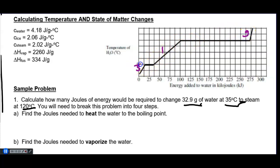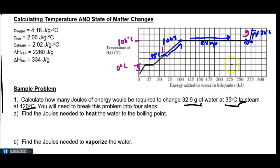Mark the starting temperature at 35°C and the ending temperature at 120°C on the graph. The water must heat from 35°C up to 100°C as a liquid, then evaporate at 100°C, then continue heating as steam up to 120°C. So there are three steps: Step 1 — heat the liquid; Step 2 — evaporate; Step 3 — heat the steam. We'll do three calculations and add all the energy values together for the total.